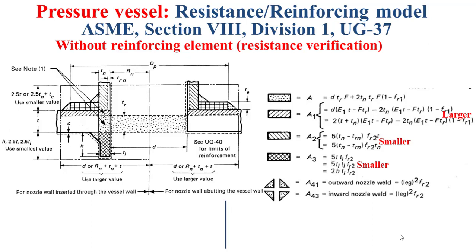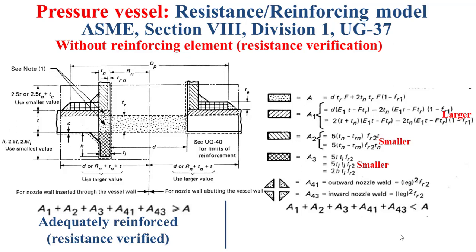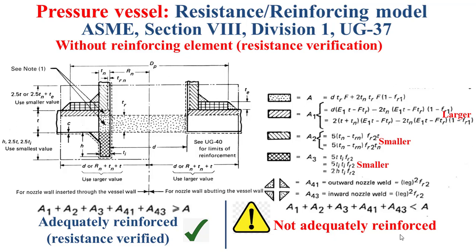Based on this model, two cases can be obtained. Case 1 is when the sum of the cross-sectional areas available for reinforcement is higher than the total cross-sectional area of reinforcement required in the plane under consideration — the opening is adequately reinforced, so the resistance of the opening is verified. But in Case 2, the opening is not adequately reinforced, and we have to add a reinforcing element or increase the thickness around the opening.